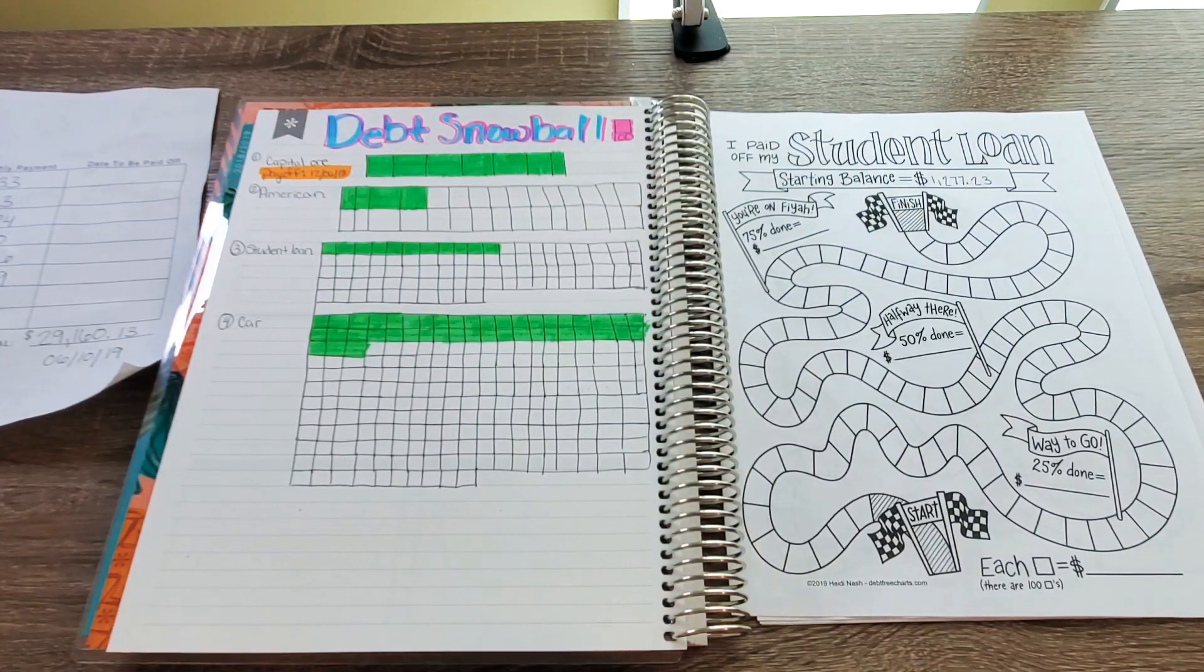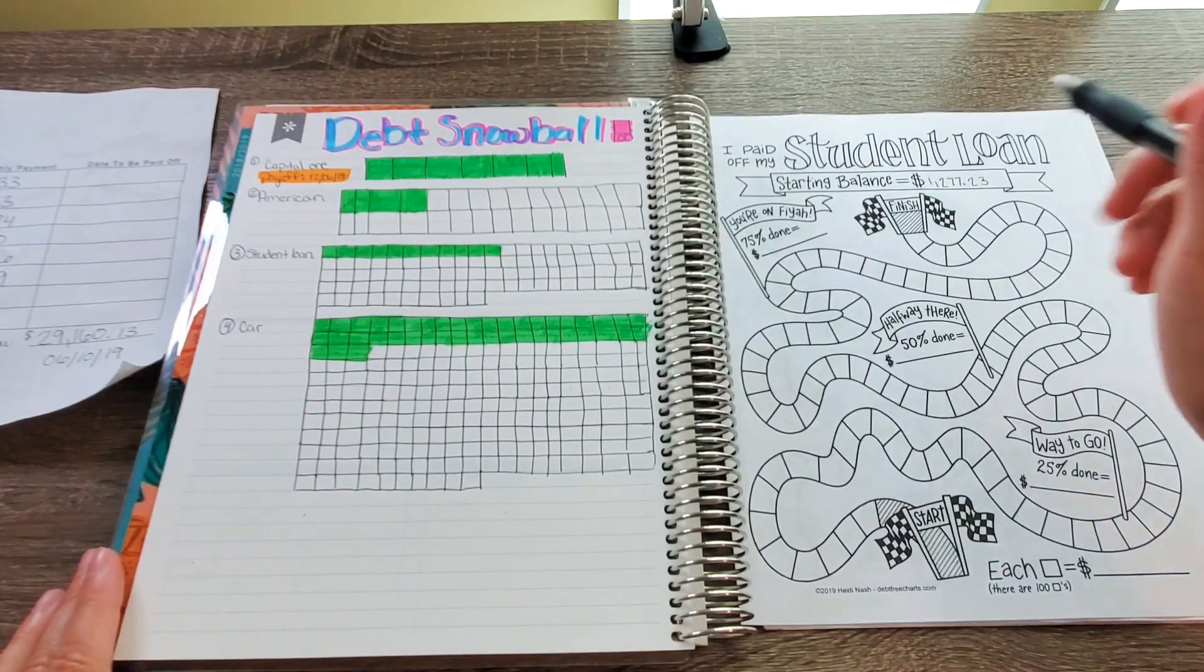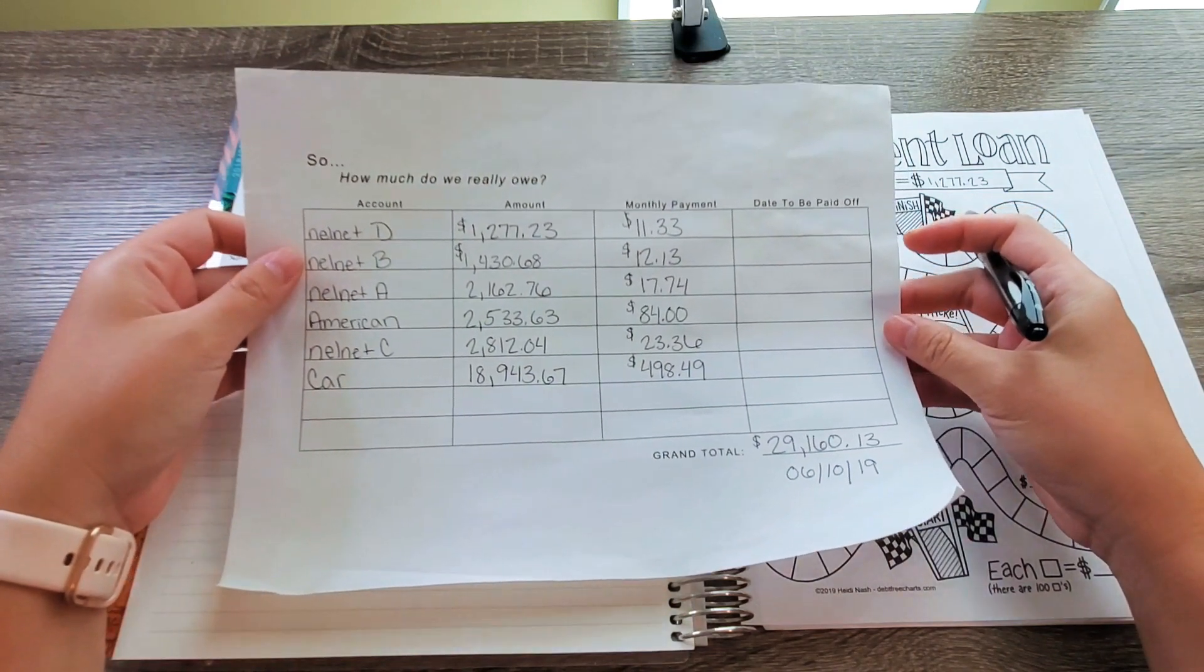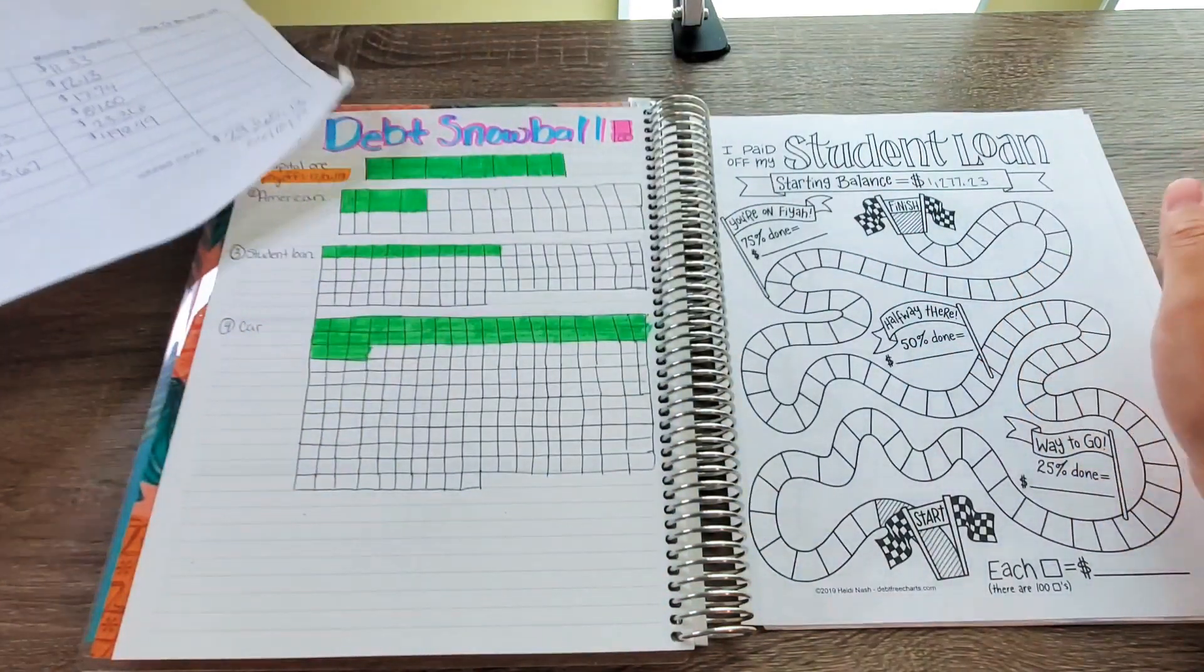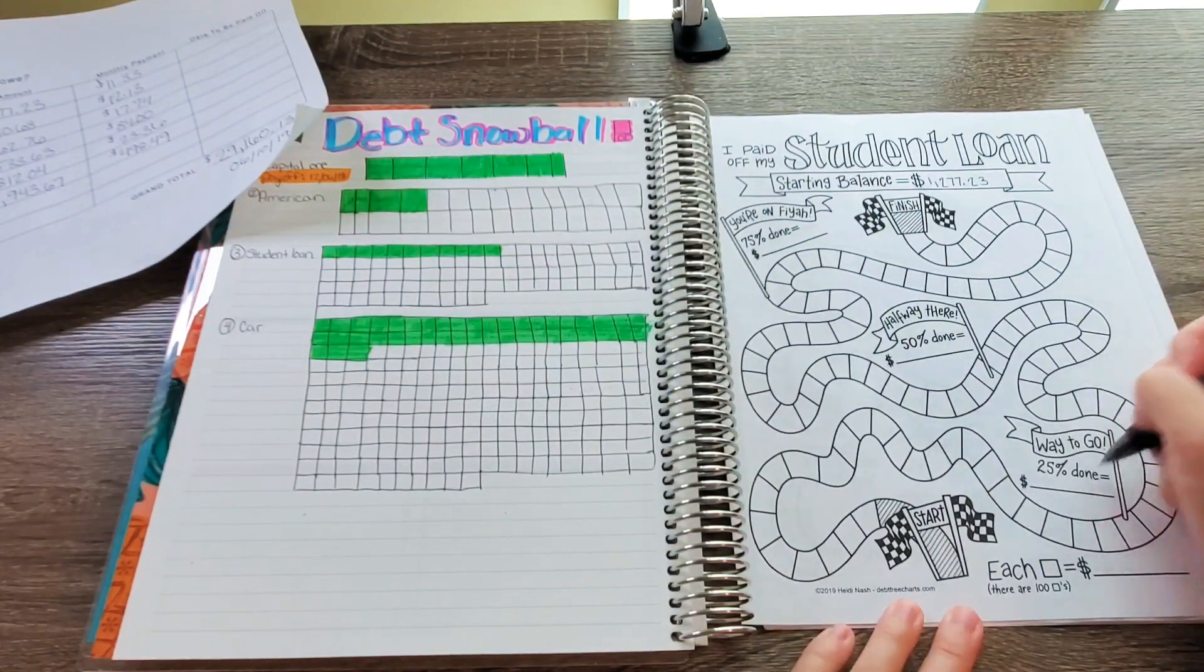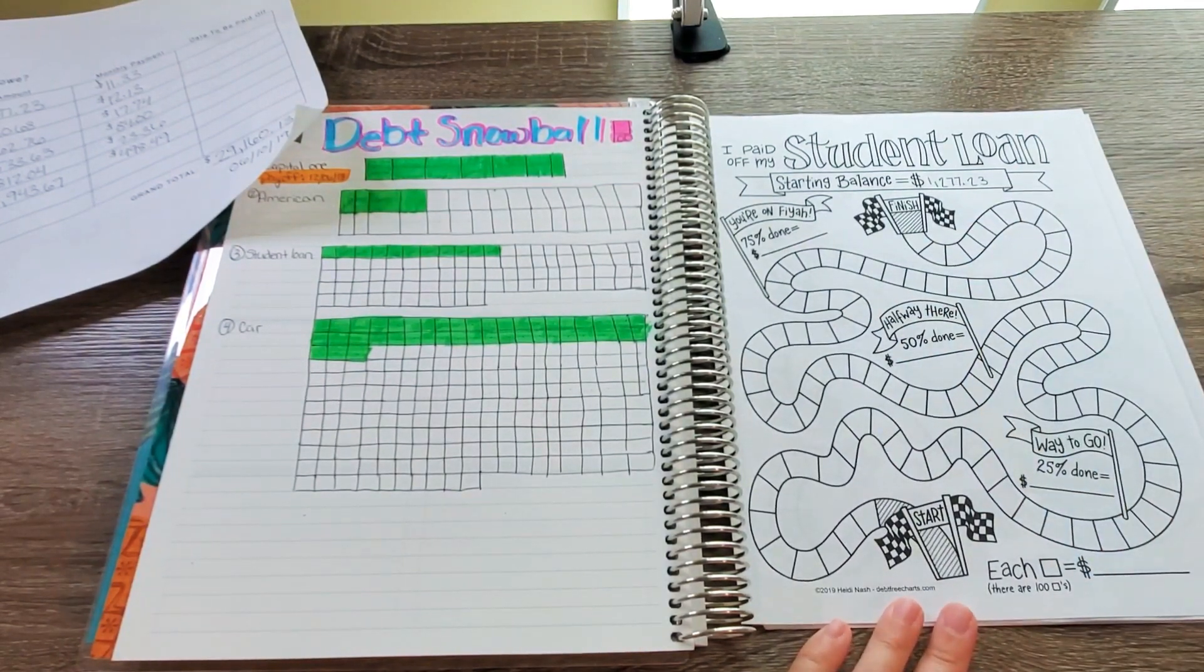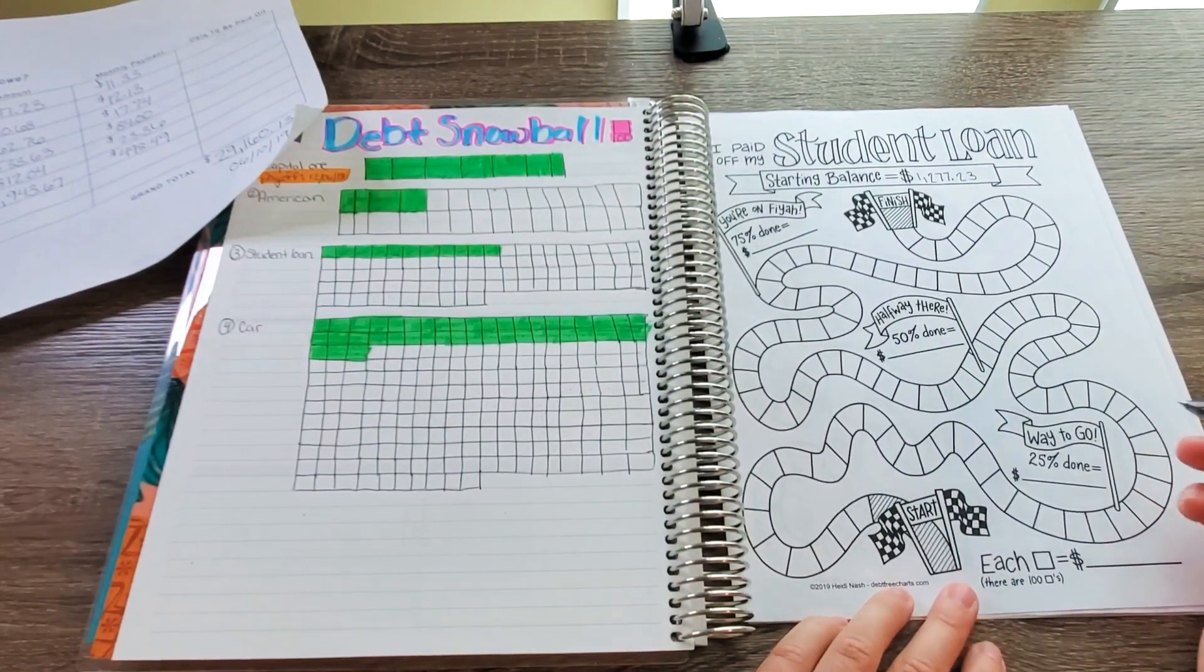Alright. So I have all of my screens pulled up on my computer that I'm going to be looking back and forth also. So for student loan number one, which is the Nelnet D, it was $1,277.23. Now we are going to fill in the halfway marks, 25%, 50%, and 75% off, and then we will be coloring some. So this will be a long video. Just let y'all know.